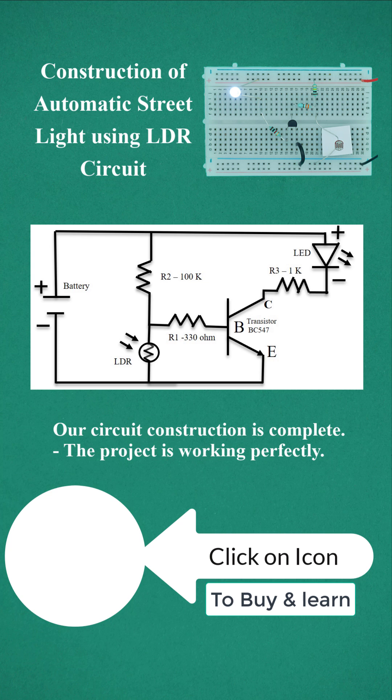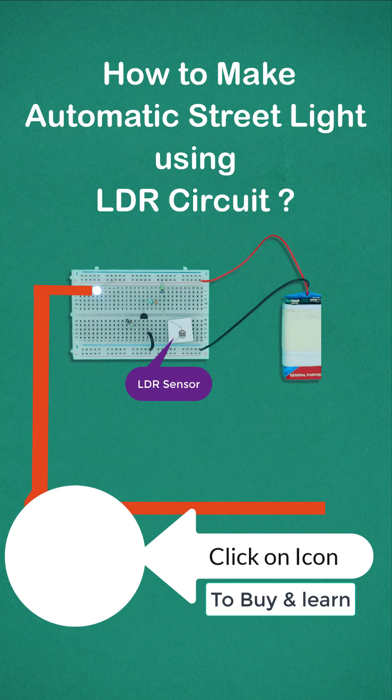The circuit construction is complete. The project is working perfectly. How to make an automatic street light using LDR on breadboard.